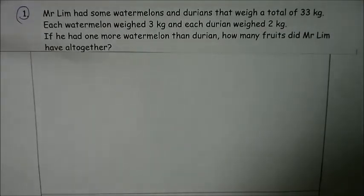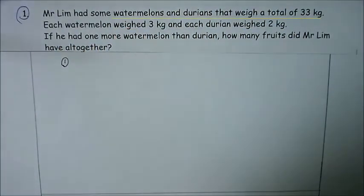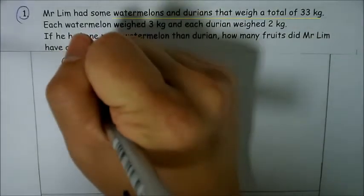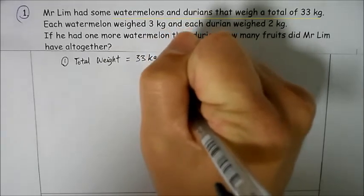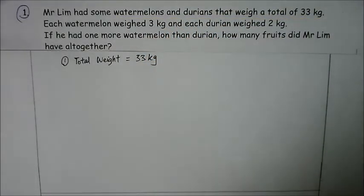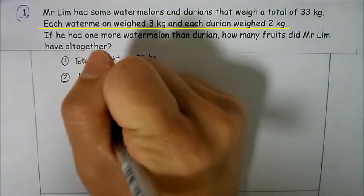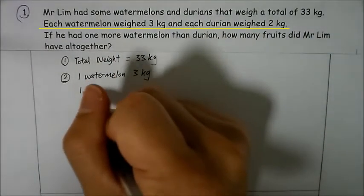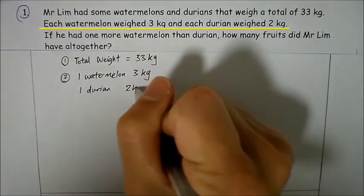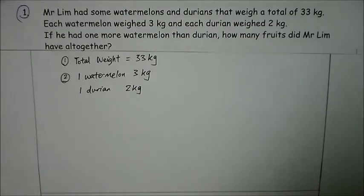Let me take down some notes given in the question to help us. The question states that the total weight of watermelons and durians is 33 kg, so I write down the total weight as 33 kg. The question also states the weight of each fruit: one watermelon weighs 3 kg and one durian weighs 2 kg. The last important information is that there is one more watermelon than durian.